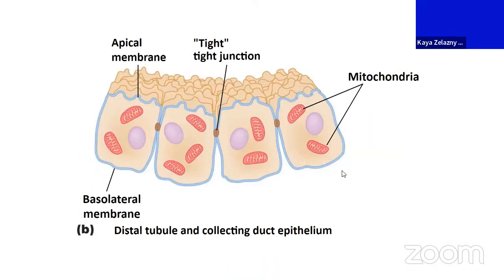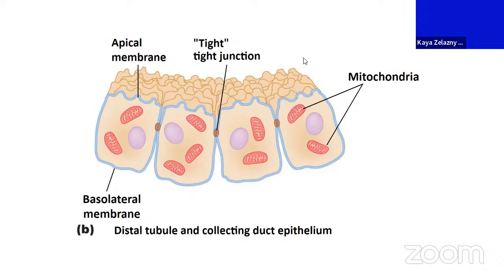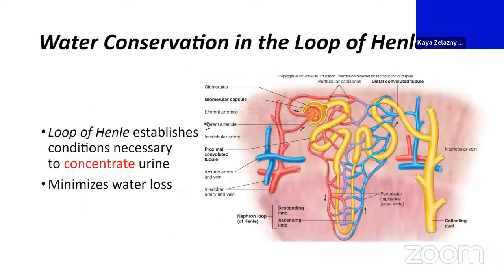Looking at the bigger picture of the cell diagram: we have our basolateral membrane, which is the part of the membrane that faces the blood—the peritubular capillaries would be at the bottom of this image. The apical membrane faces the lumen, the hollow part of the nephron tube. This membrane is touching anything in the filtrate, seeing all that material flowing past.